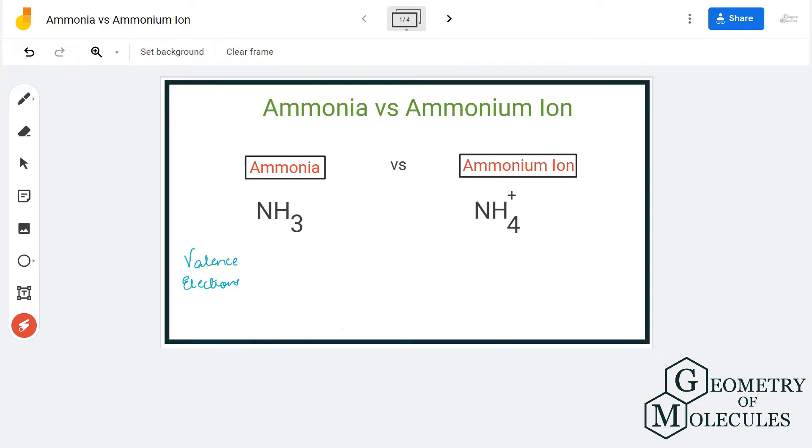The plus sign is because of the positive charge it has after giving away one electron, and that's why it's an ion. But ammonia is a complete compound because the charges are neutral.